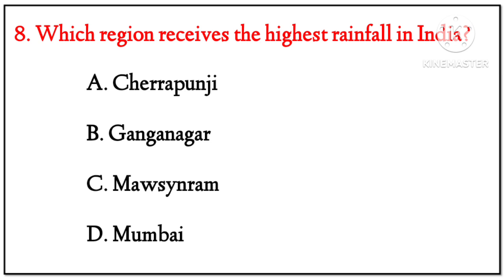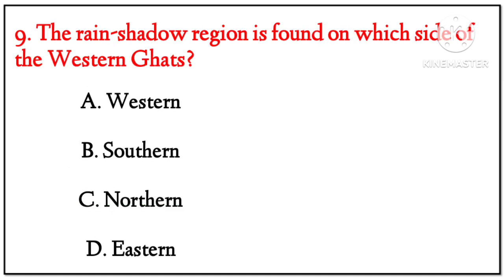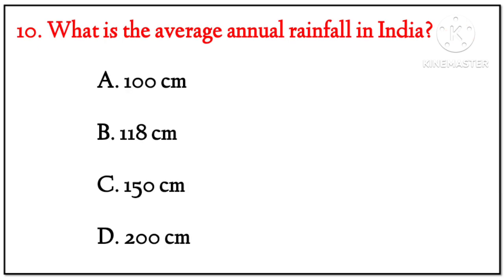(8) Which region receives the highest rainfall in India? Options: Cherrapunji, Ganganagar, Mawsynram, Mumbai. Answer: Mawsynram. (9) The rain shadow region is found on which side of the Western Ghats? Options: Western, Southern, Northern, Eastern. Answer: Eastern. (10) What is the average annual rainfall in India? Options: 100 cm, 118 cm, 150 cm, 200 cm. Answer: 118 centimeters.